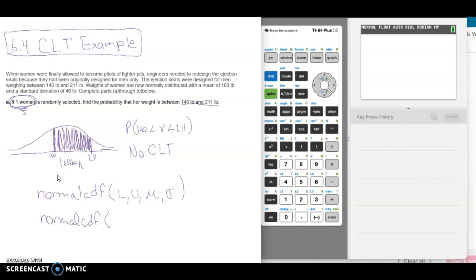So we have normal CDF. The lower limit is where our data starts being shaded, so no shading until we get to 140. The upper limit is the edge of the shaded region, which is 211. Our mean is 163. And if we read the problem carefully, it does say the standard deviation is 46 pounds.